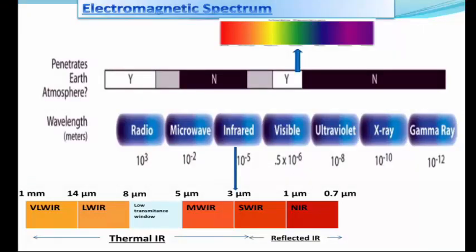Now let's review our electromagnetic spectrum. As discussed in our first video on basics of remote sensing, the electromagnetic spectrum is basically divided into seven regions: gamma ray, X-ray, ultraviolet, visible, infrared, microwave, and radio waves.